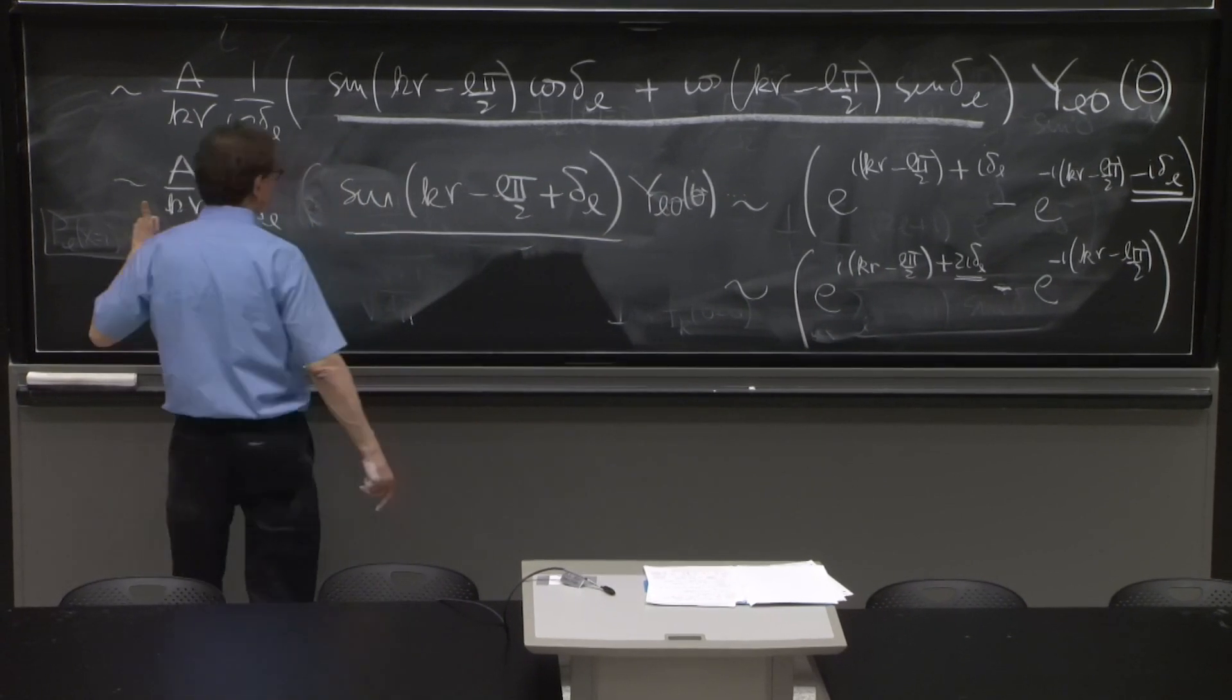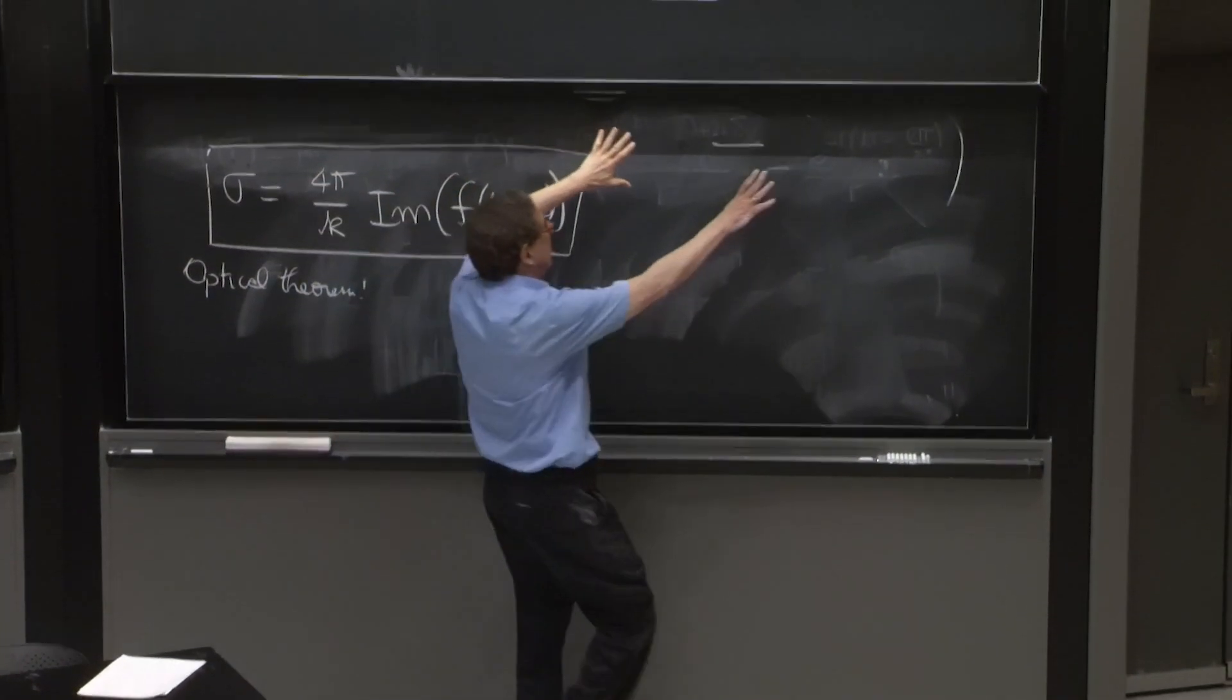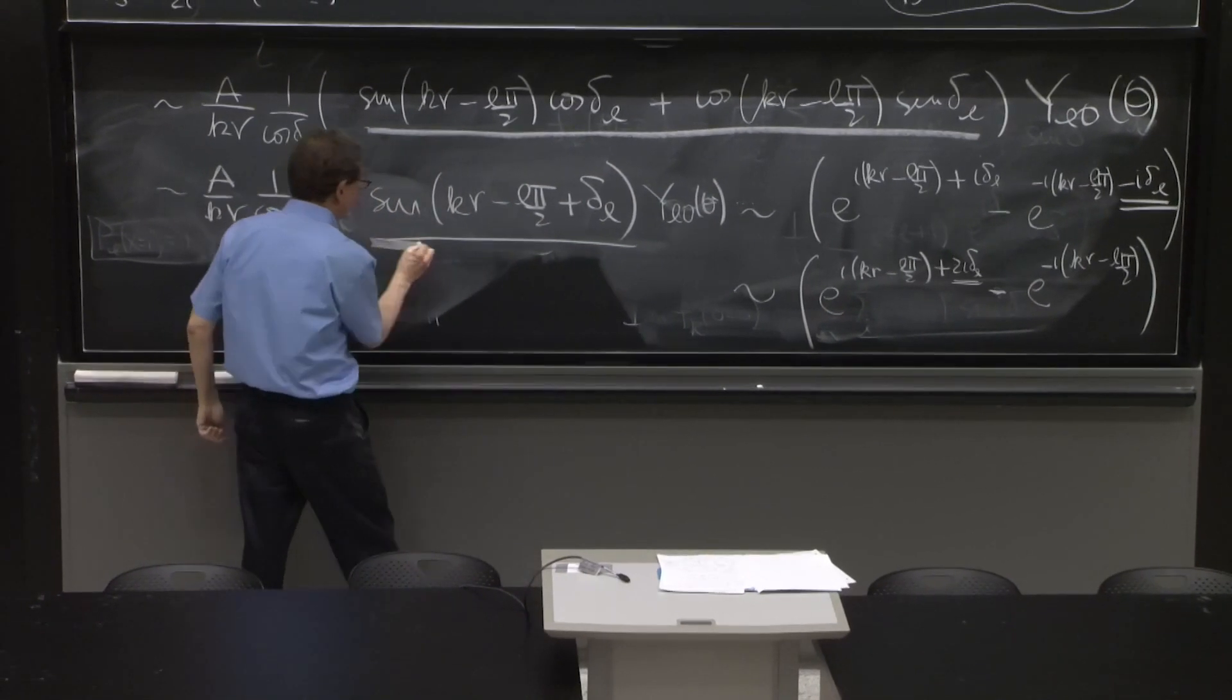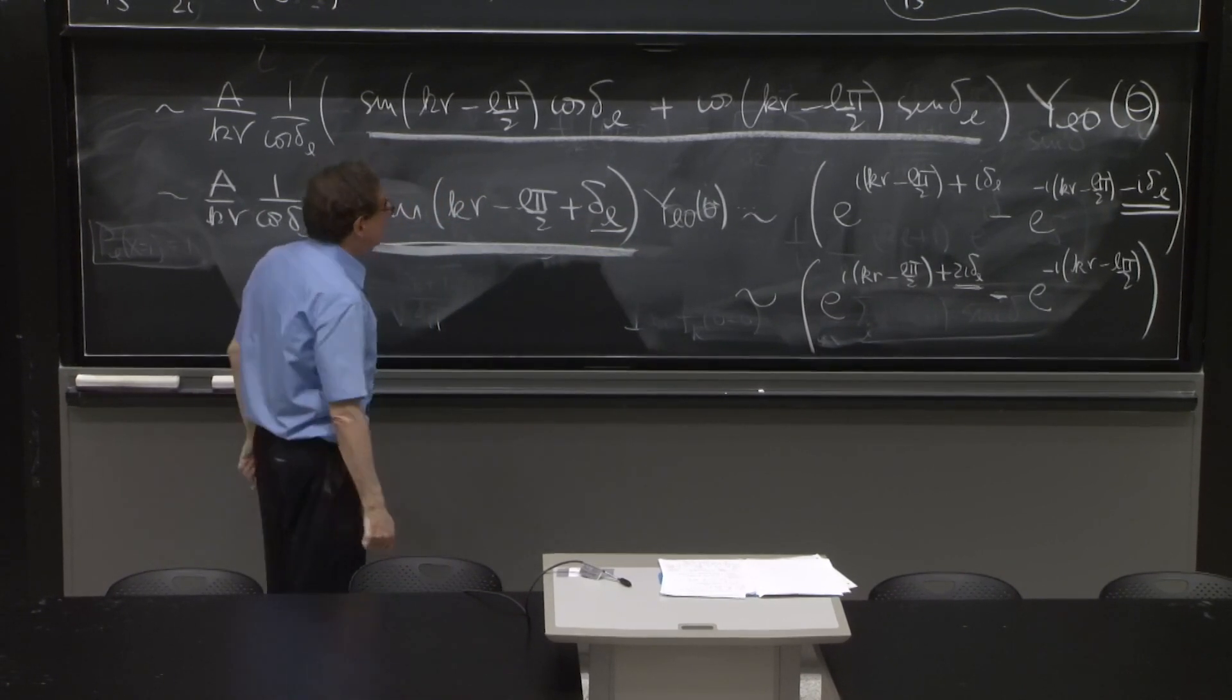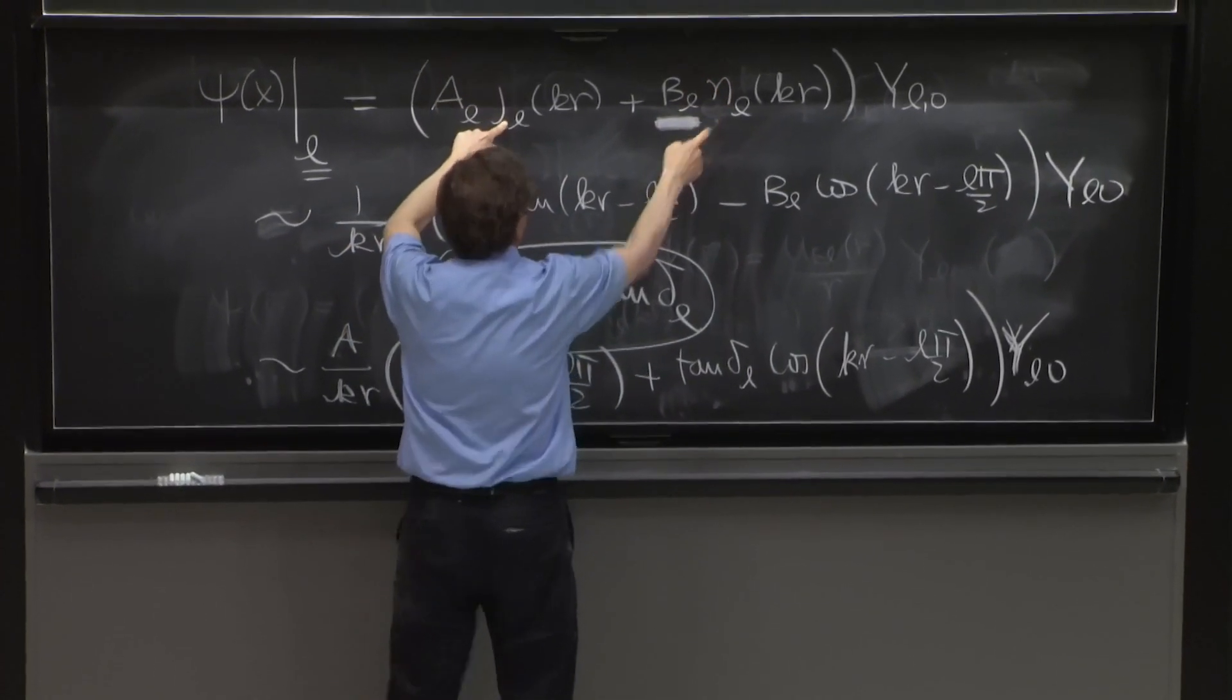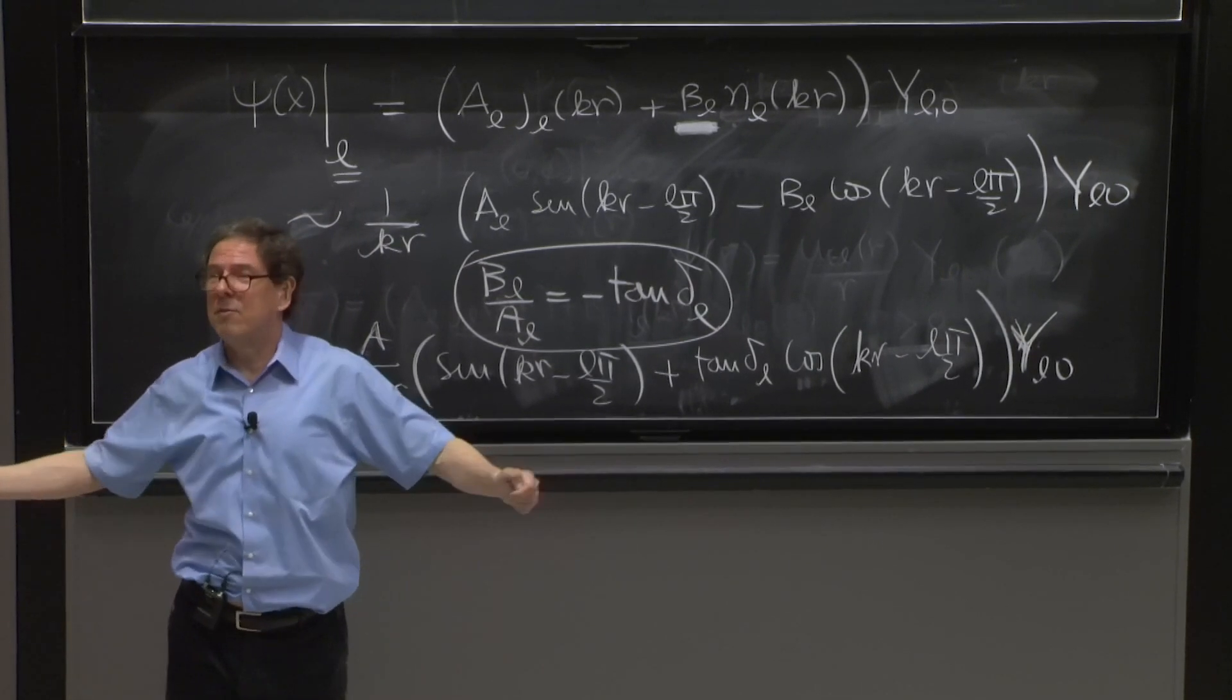So now you have three ways of recognizing a phase shift. A phase shift can be recognized in the partial wave expansion. A phase shift can be recognized by looking at the scattering wave far away and seeing that it takes this form. And you say, oh, here is the phase shift. And the phase shift can be recognized by looking at the solution in terms of spherical Bessel functions. And it's the ratio of these coefficients. Those are the three definitions of the phase shift. Three ways of seeing your phase shift.